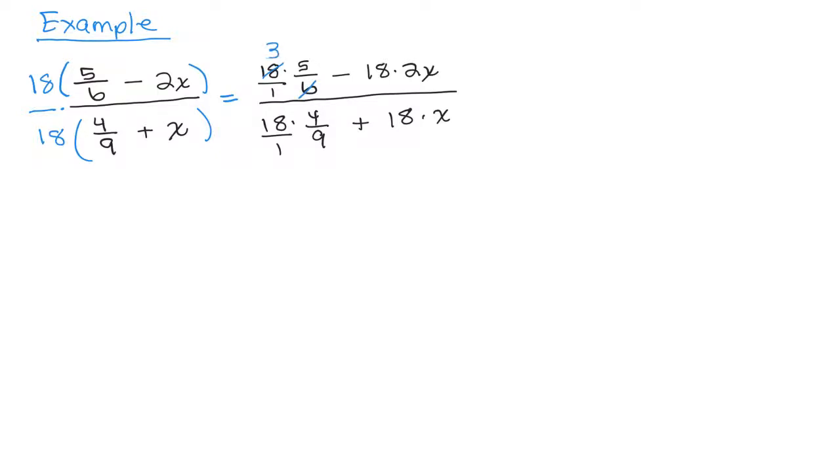So six goes into 18 three times, and nine goes into 18 twice. So there's no fractions over here for 18 times 2x or 18 times x, so there's nothing to cancel. You're just going to be multiplying.